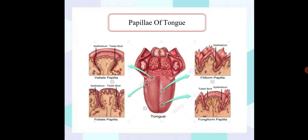Actually, there are four different types of papillae present in tongue. First is the vallate papillae, next is the foliate papillae, next is the fungiform papillae, and the filiform papillae, with their regions where exactly they are present.